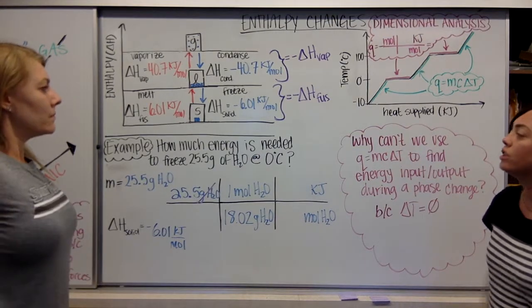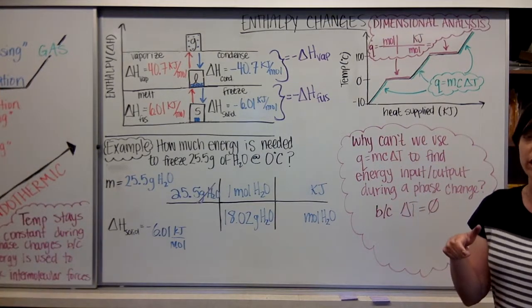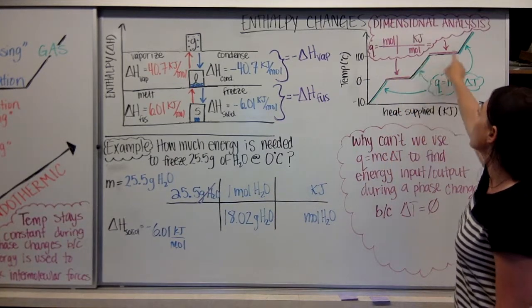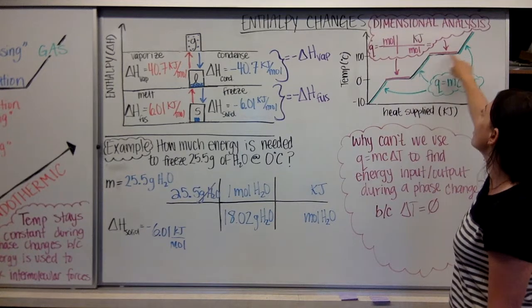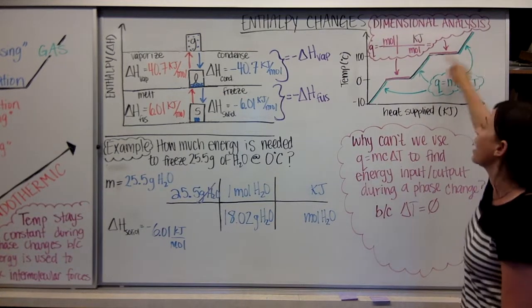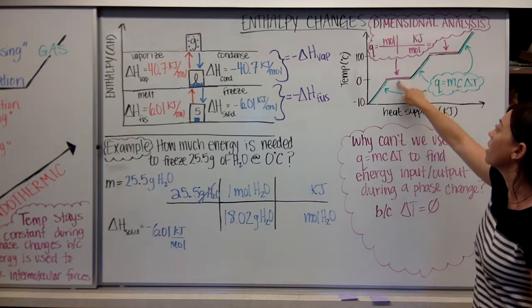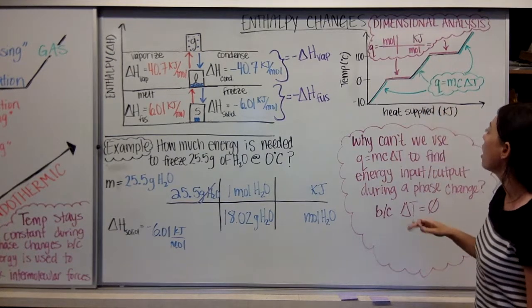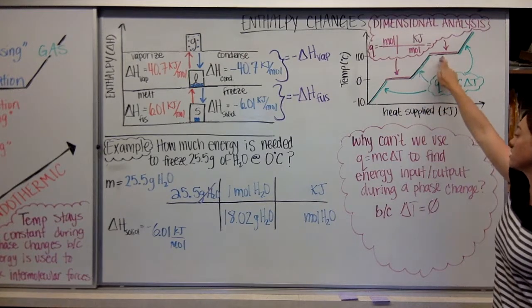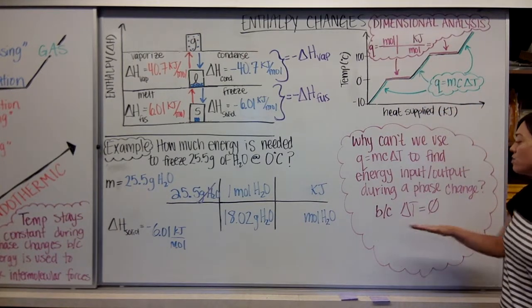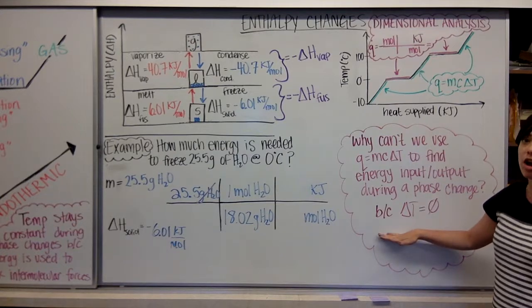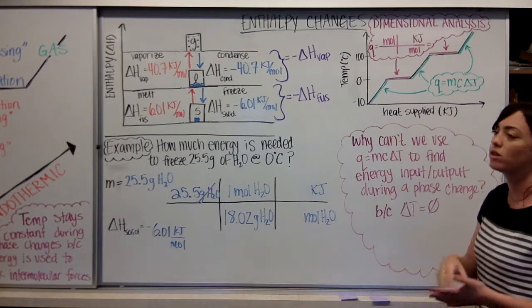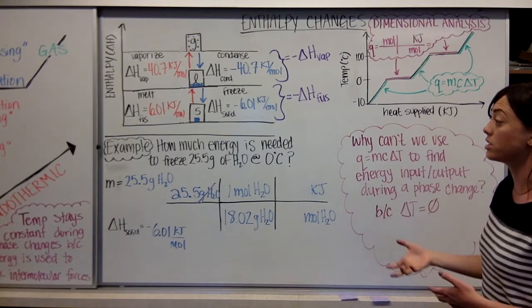Right now we are going to use these values to calculate how much energy it takes to go through an actual phase change. We already know how to do the Q equals mcΔT steps. The reason we can't use Q equals mcΔT for the flat-line phase change regions is because delta T is equal to zero, and if delta T equals zero then Q would equal zero — but we know that's not the case; we know there's energy going into our system.